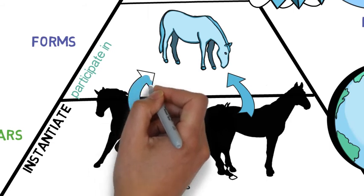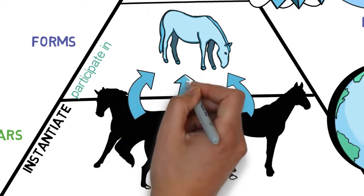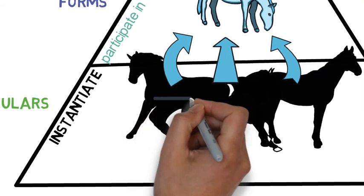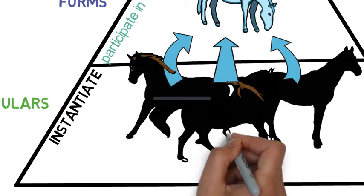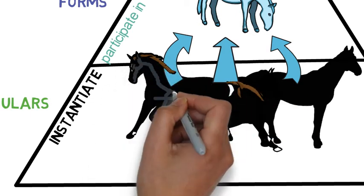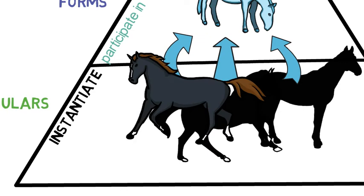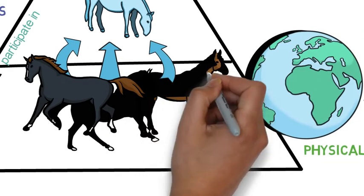And one form could be instantiated by many different particulars. Plato thought that it was for this reason that we were able to recognize things that are different as somehow being the same, that we are able to recognize,